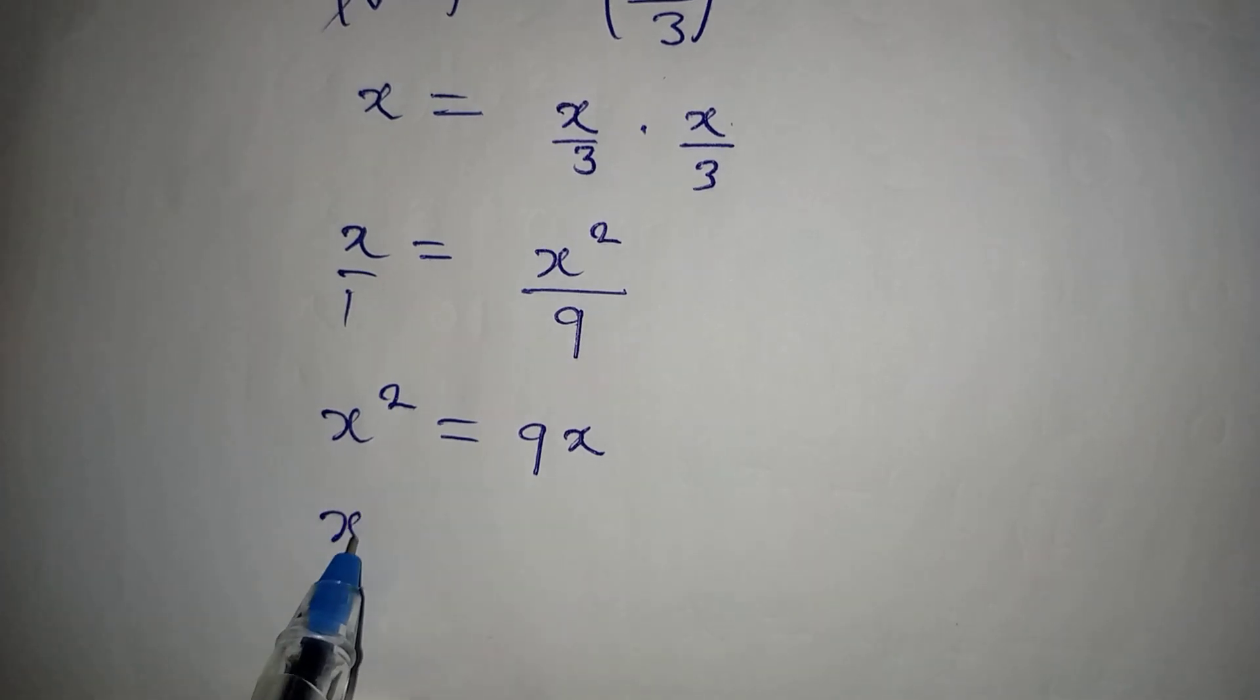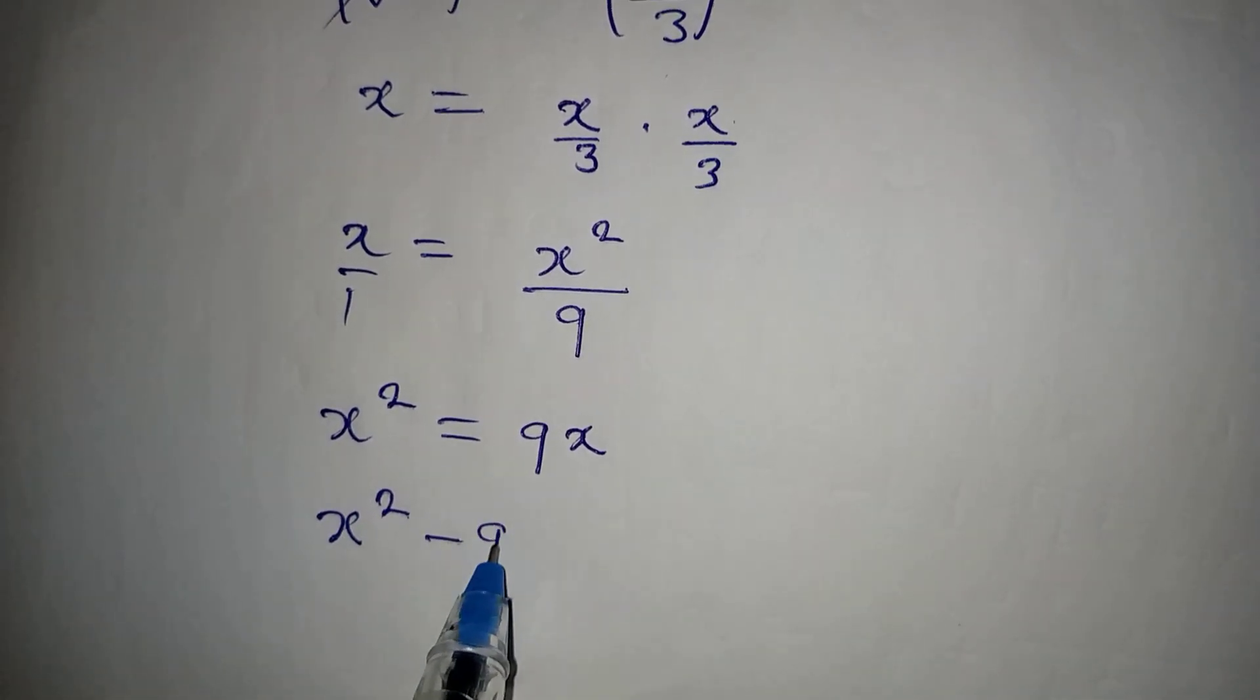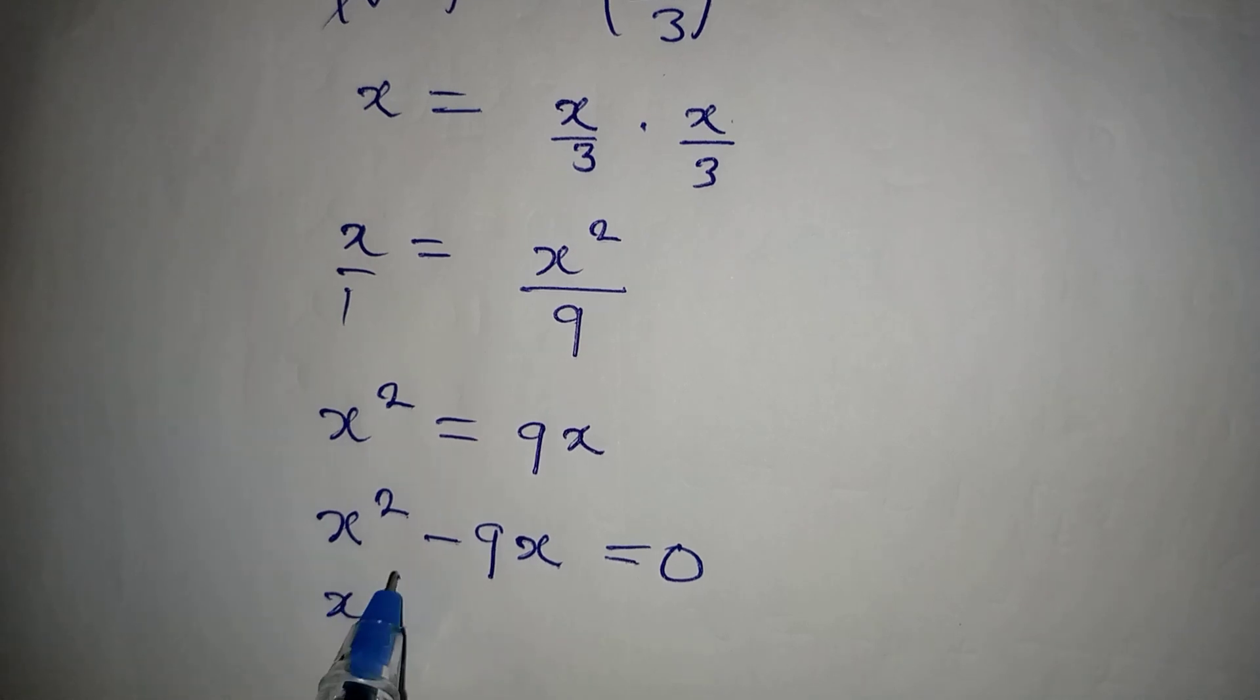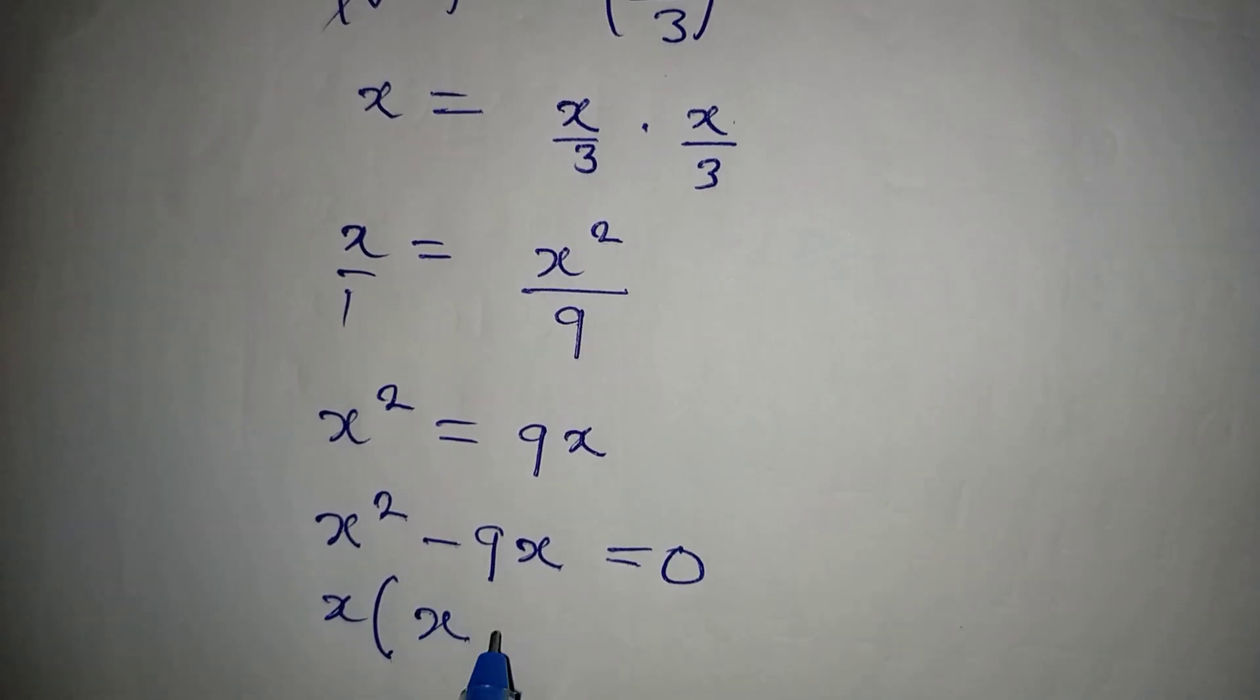x is common, so we have x(x - 9) and this is equal to 0.